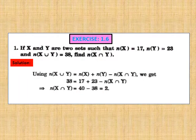Let's start exercise 1.6. Question 1: if X and Y are two sets such that the number of elements in X is 17, in Y is 23, and in X union Y is 38, find the number of elements in X intersection Y. Using the formula, NX union Y equals NX plus NY minus NX intersection Y. Putting values: 38 equals 17 plus 23 minus NX intersection Y. So NX intersection Y equals 40 minus 38, which is 2.